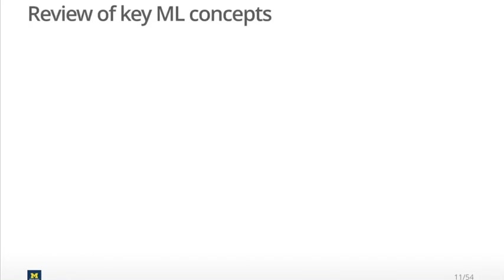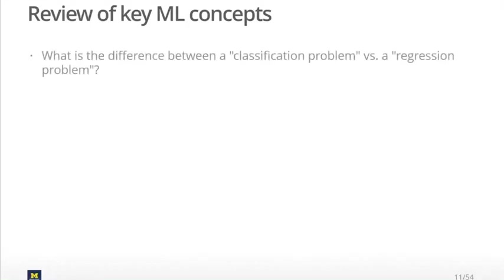Let's review a couple of key machine learning concepts. The first question is, what is the difference between a classification problem and a regression problem? Now, regression has a very specific meaning in statistics, and I'm not referring to that meaning here, which refers to regression models like linear regression and logistic regression. In the machine learning context, a classification problem is simply any problem where the outcome variable is either binary or categorical, and a regression problem is simply any kind of model where the outcome variable is a continuous number.